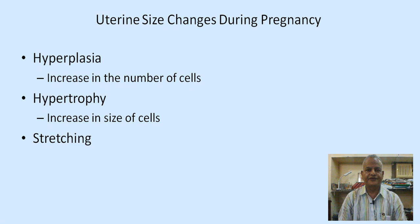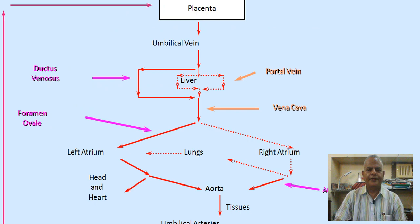The uterus continuously grows as pregnancy progresses. This occurs because of an increase in the number of cells, an increase in the size of cells, and stretching. The uterus is one organ that has immense expansion and retraction capabilities.